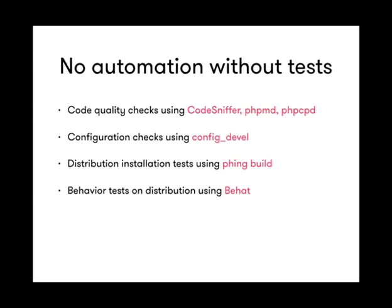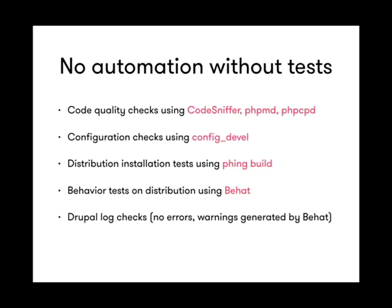Then we do behavior tests using Behat. We also do log checks on every single commit — something often forgotten but a great pain six months into a live site when your logs are exploding. Since we're installing our site continuously and simulating editorial behavior using Behat, we can see whether any error logs or warnings are generated. If there is one warning, the build will fail and the developer won't be able to commit their code.